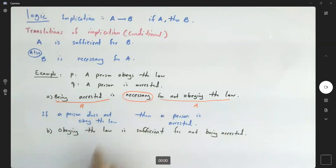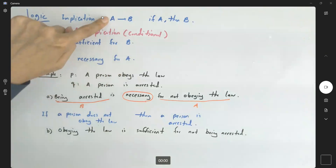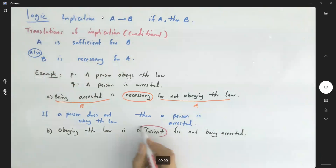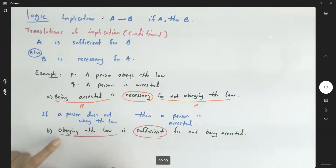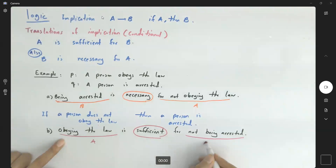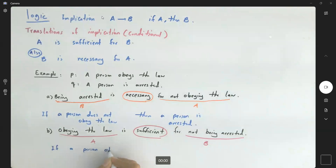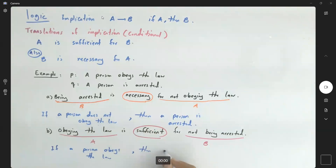Using 'necessary' — what about 'sufficient'? Remember that a is sufficient for b means a implies b. We have sufficient here: obeying the law is sufficient for not being arrested. So if a person obeys the law, then a person is not arrested. You can write this as: if a person obeys the law, then a person is not arrested.